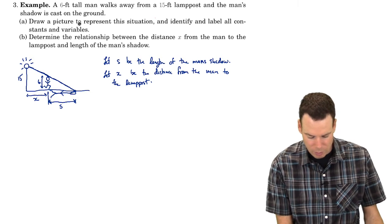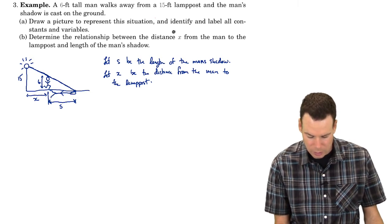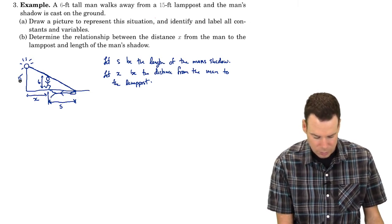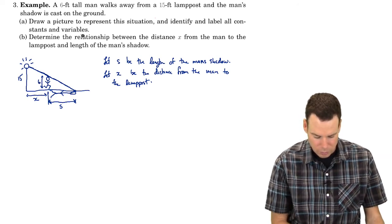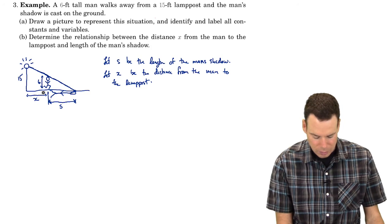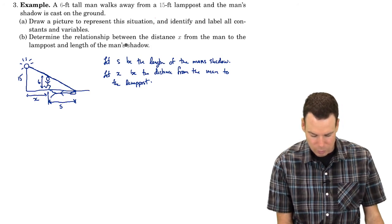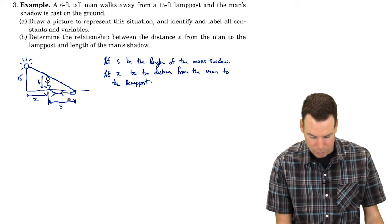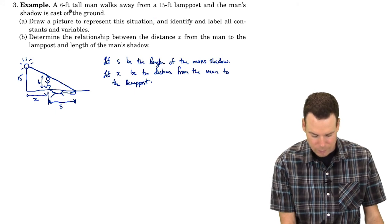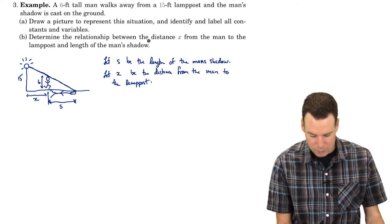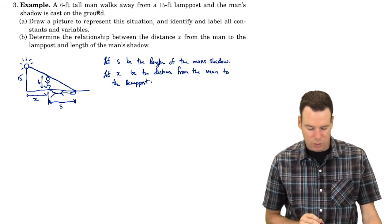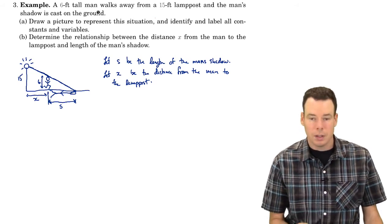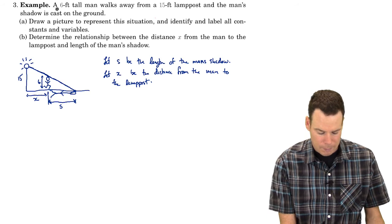Have we done everything? We've drawn a picture — yes. We've identified and labeled all constants: the two constants given were 15 and 6, and they're in the diagram. And all variables: the distance from the man to the lamp post, x, and the length of the man's shadow, S, were both asked about in the second part. So part A is complete.